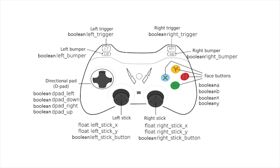For FTC teams, the left trigger and right trigger will return floats, but for First Global teams they return boolean values, meaning they can either be pressed or not pressed. We also have the joysticks, and those return floats for left stick X, left stick Y, right stick X, and right stick Y.